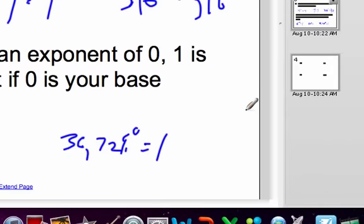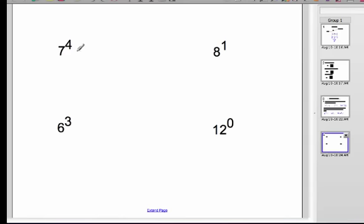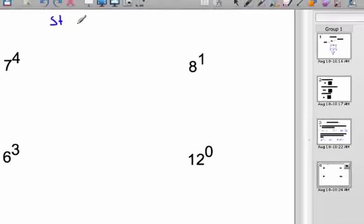So let's just try a couple of examples here. Remember those rules: to the first power is going to equal the base, to the power of 0 is going to equal 1. So we have 7 to the 4th power, and I want these in standard form. I should put that up here. Standard. I'll just put st form.